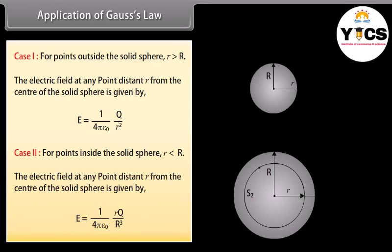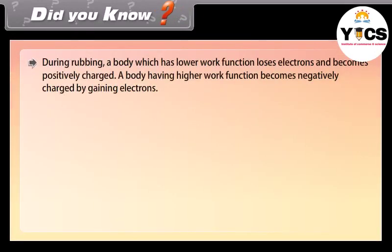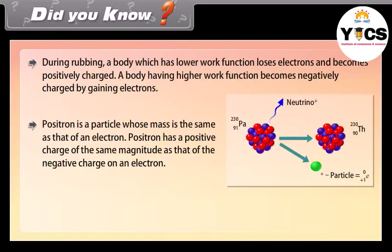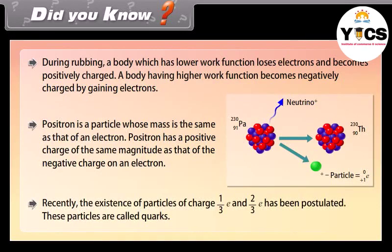Did you know? During rubbing, a body with a lower work function loses electrons and becomes positively charged, while a body with a higher work function gains electrons and becomes negatively charged. A positron has the same mass as an electron but a positive charge of the same magnitude. Recently, the existence of particles with charges of 1/3 e and 2/3 e has been postulated — these particles are called quarks.